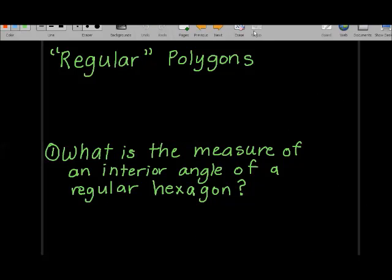Let's talk about a regular polygon. A regular polygon just means that all sides are congruent and all the angles are congruent.